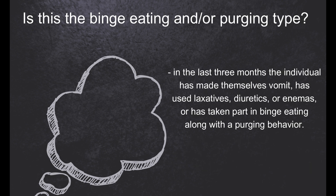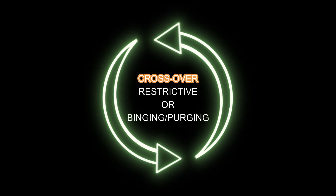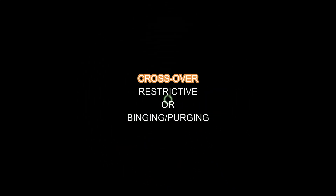The binge eating or purging type means that in the last 3 months the individual has made themselves vomit, has used laxatives, diuretics, or enemas, or has taken part in binge eating along with a purging behavior. It is fairly normal for the two types to cross over while the person is struggling with the disorder.